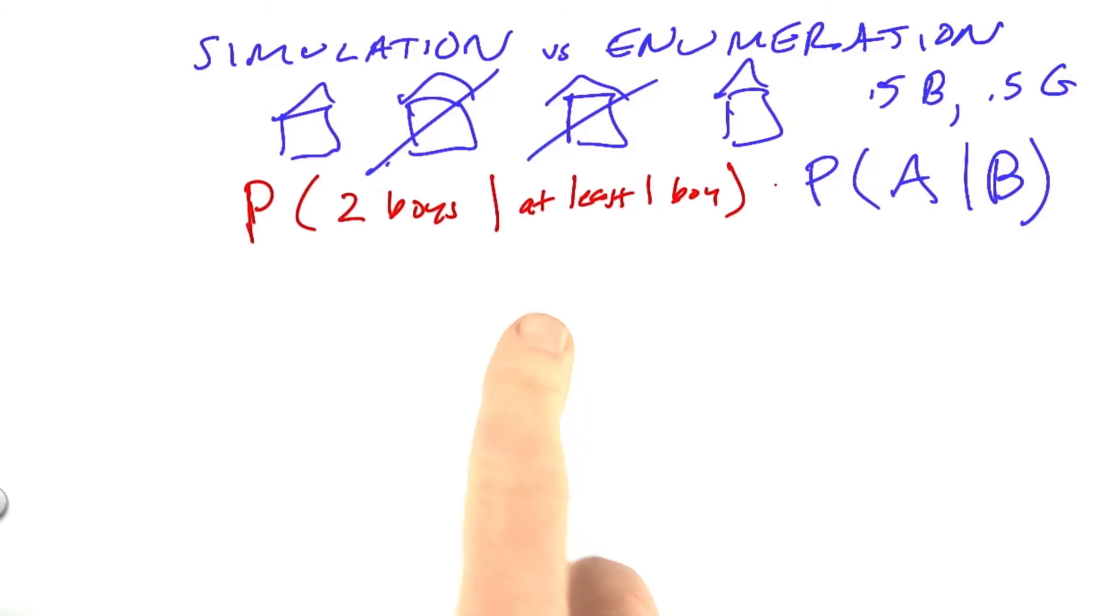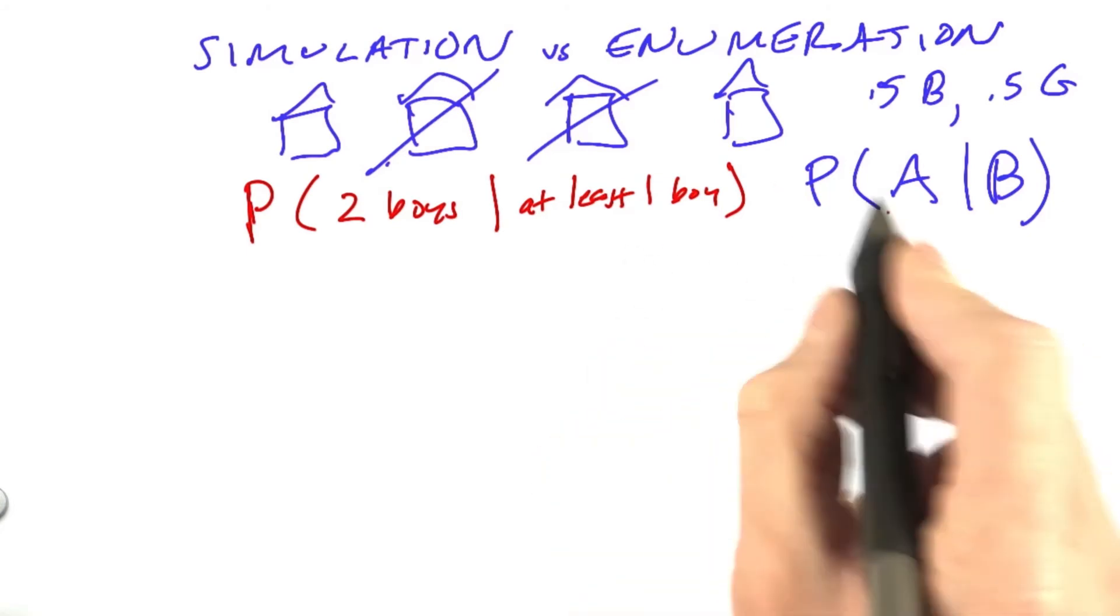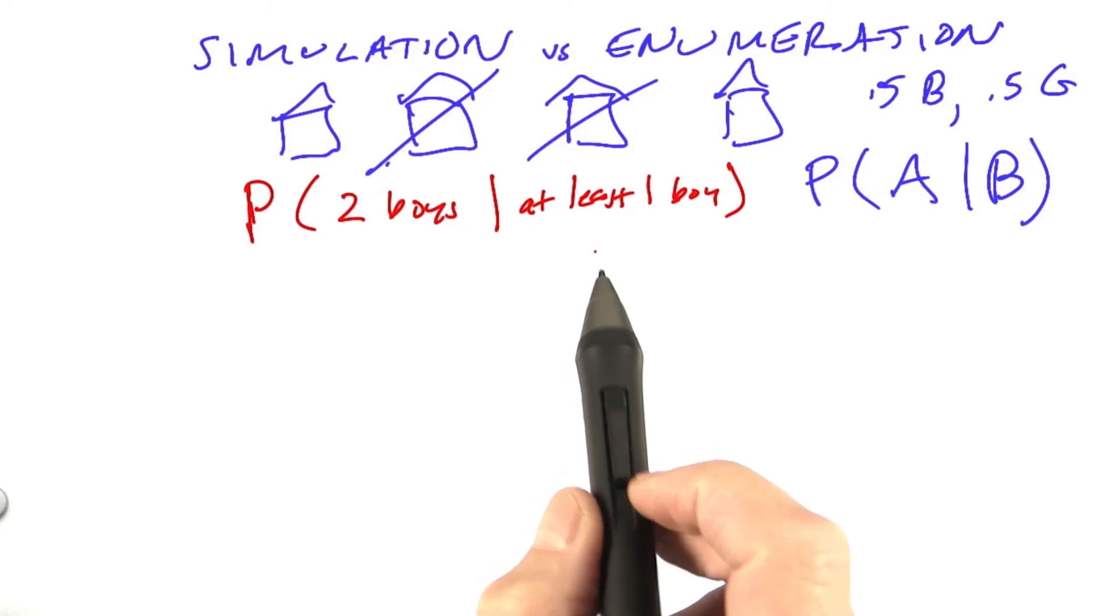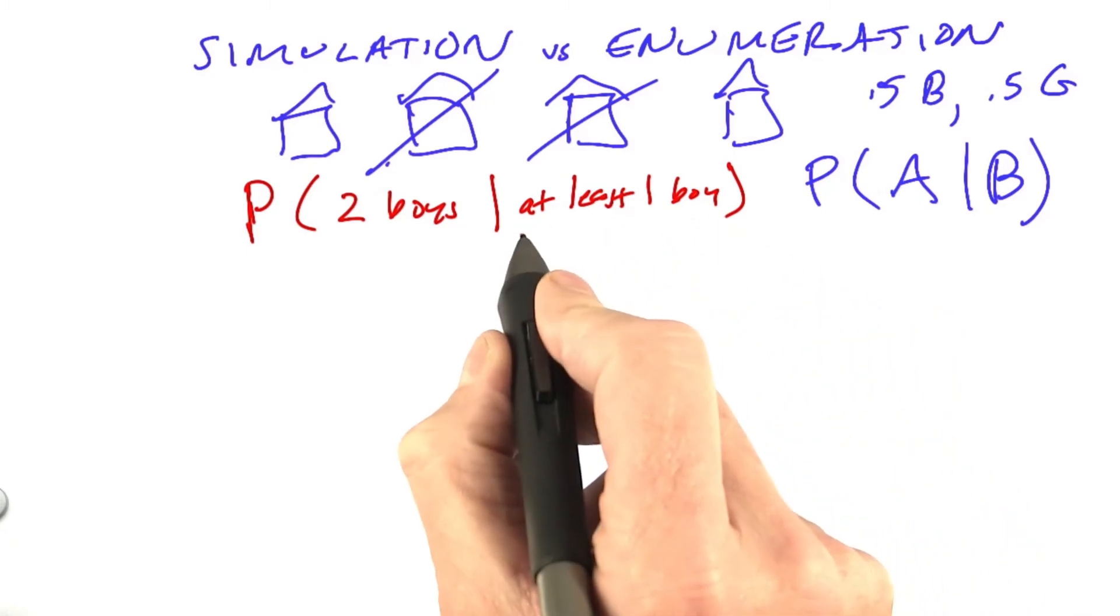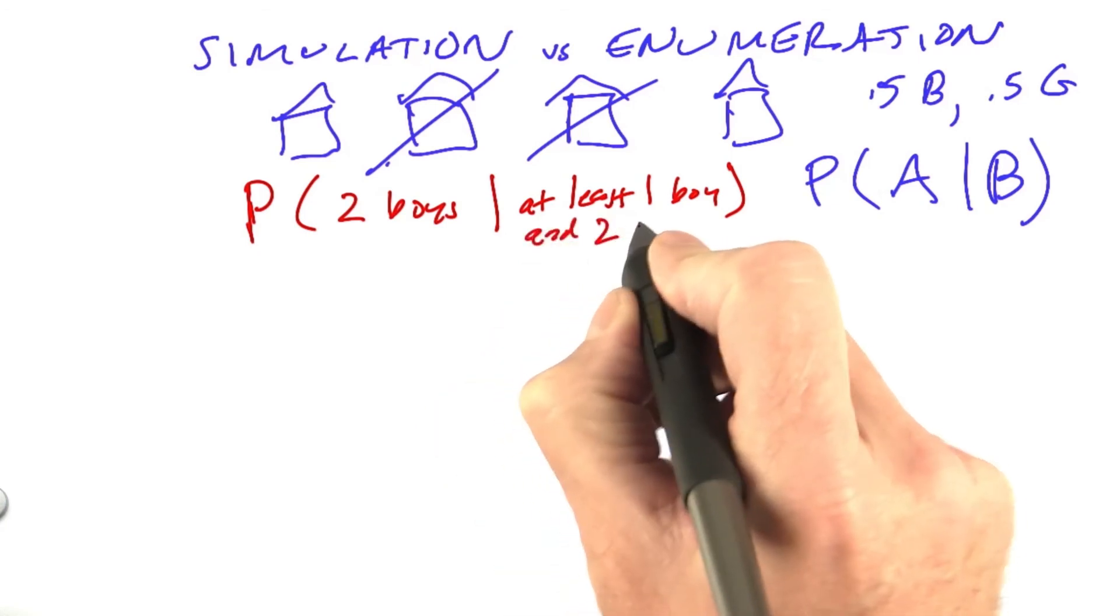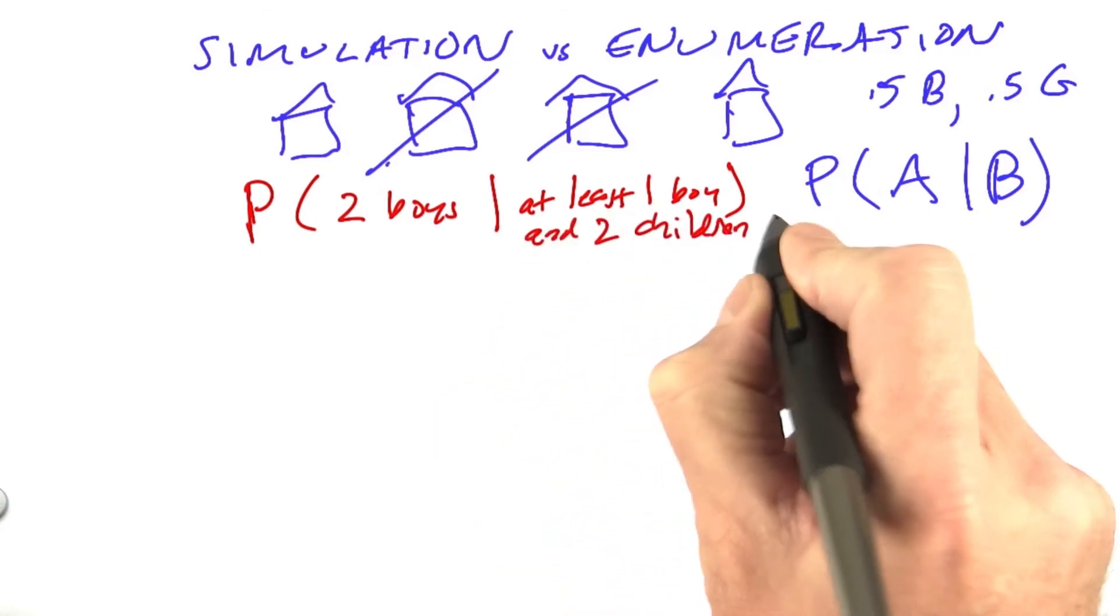Let's address the question. What's the probability of having two boys given that there's at least one boy in the family? The universe of possibilities is only the families that have exactly two children. We could put that here in the condition as well. At least one boy and two children total. What do you think this probability is equal to?